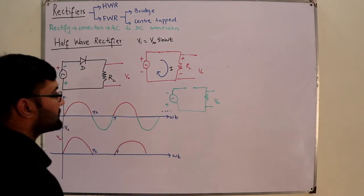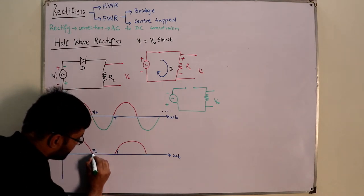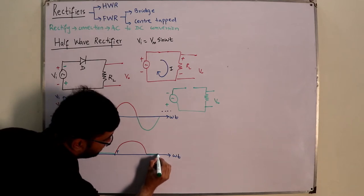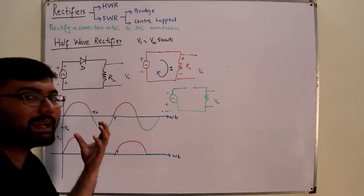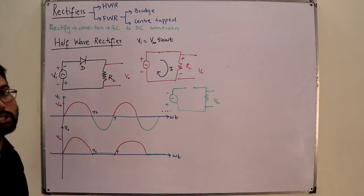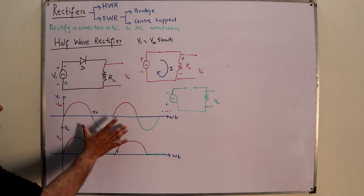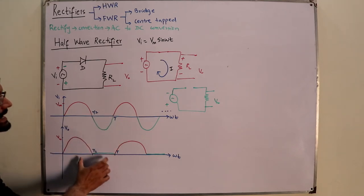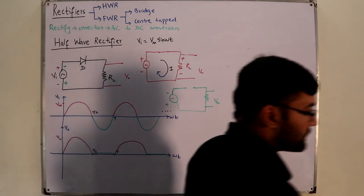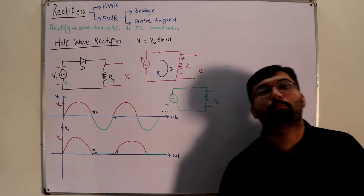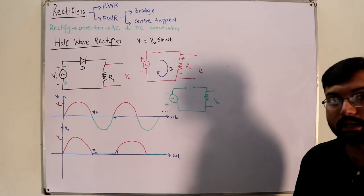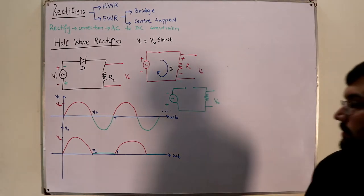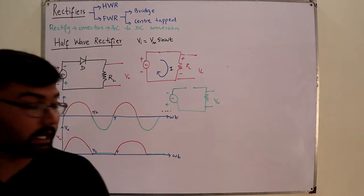With no current flowing in the negative cycle, the output voltage across the resistor terminals is zero. This is what rectification means: you have corrected the input signal by converting a pure AC signal into a pulsating DC signal. Although it is not a pure DC, it is a pulsating DC.